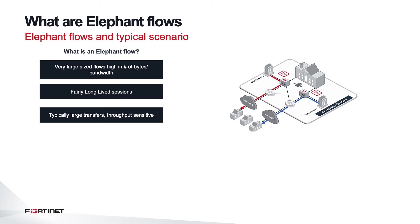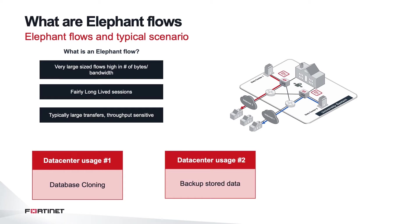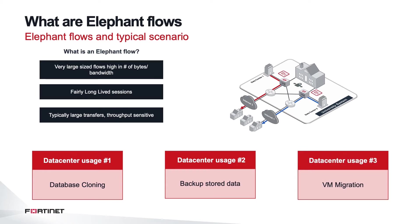One typical usage in the data center is database cloning. Some others are backing up stored data, and the most common would probably be VM migration. These types of flows typically fall into the category of elephant flows with a lot of traffic and are fairly long-lived. What's exciting is how NPA accelerates this in hardware.